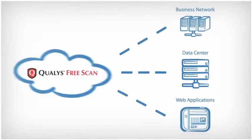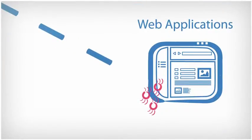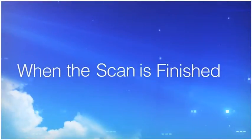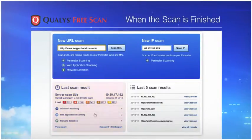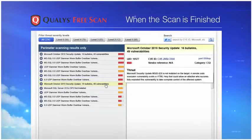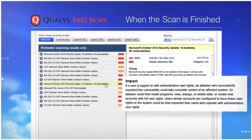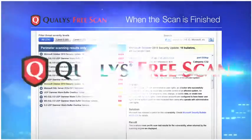FreeScan automatically looks for holes in your network security perimeter, as well as any web application vulnerabilities or malware infections. When the scan is finished, you can review the summary information and see exactly where you are at risk. Look closer at the scan detail and identify the most pressing issues. Each threat is clearly explained and corrective actions are provided so you can prevent attacks.